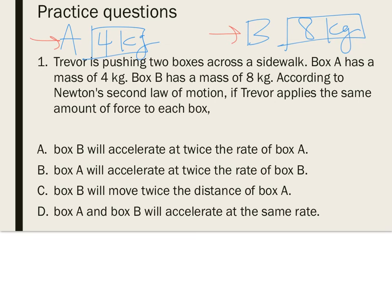Newton's second law states that acceleration is produced when a force acts on a mass, but the greater the mass — eight kilograms compared to four — the greater the amount of force needed to accelerate that object. The mass of an object is directly related to the rate at which it will accelerate when the same force is applied. Since box A is only half the mass of box B at four kilograms versus eight, box A will accelerate at twice the rate of box B if the same force is applied. That puts us at answer B.